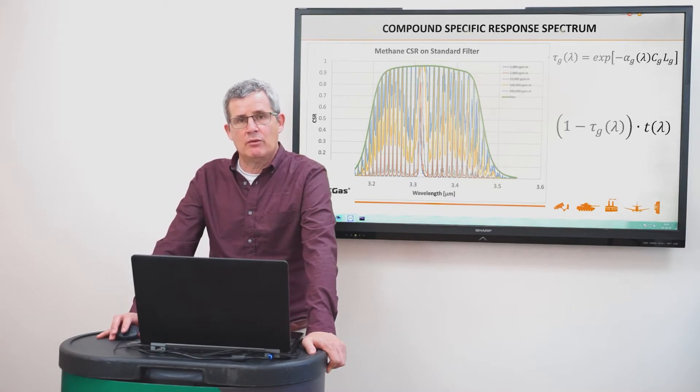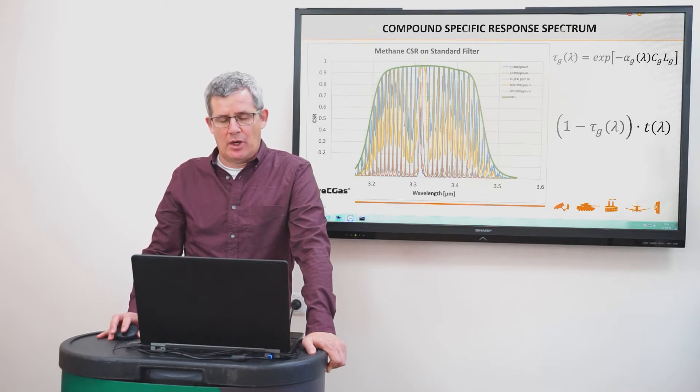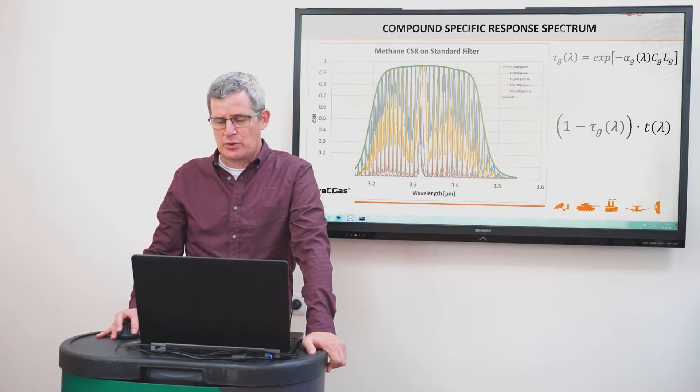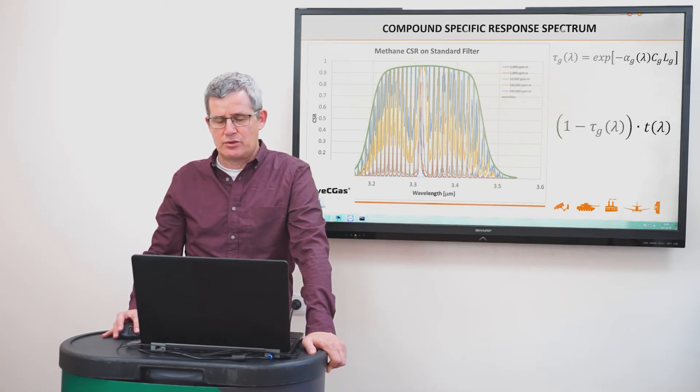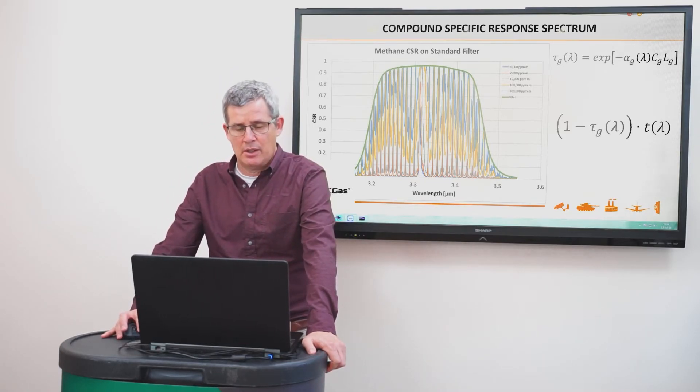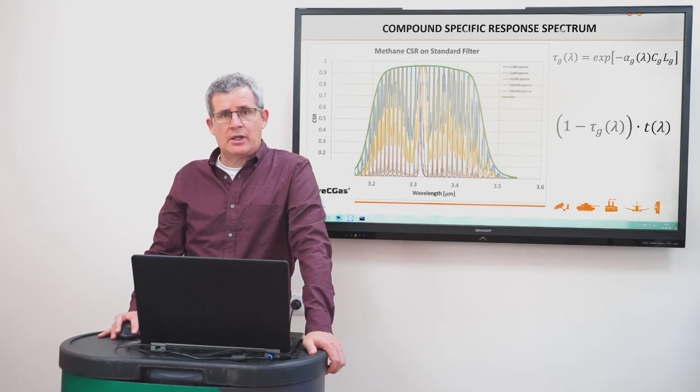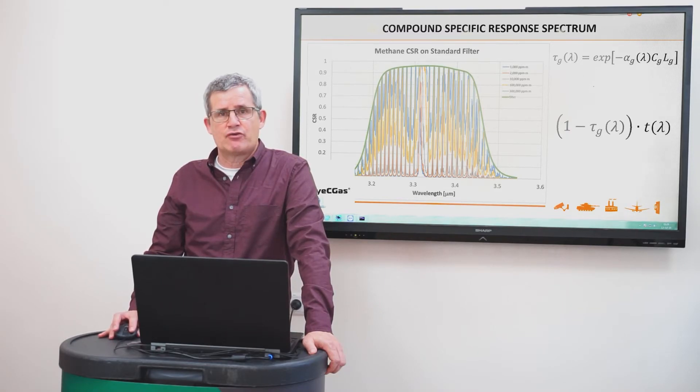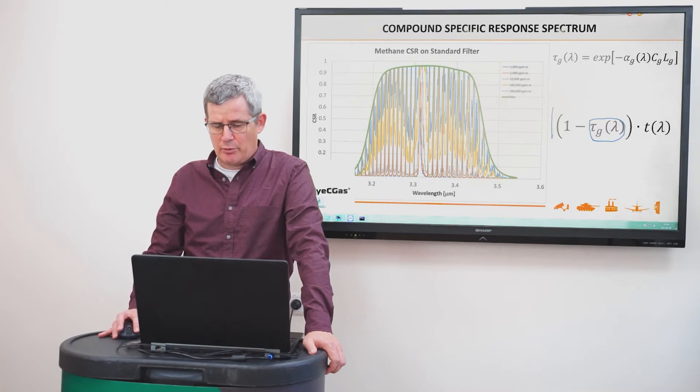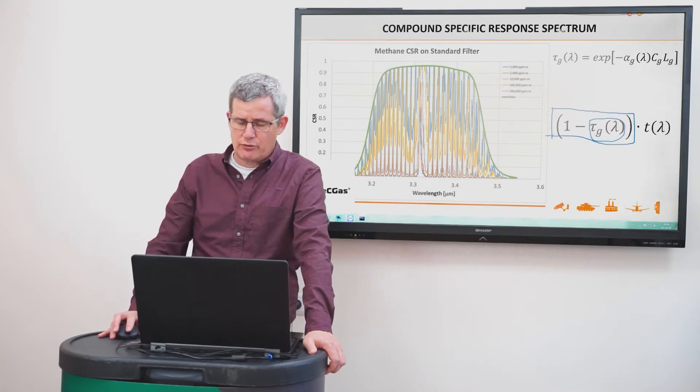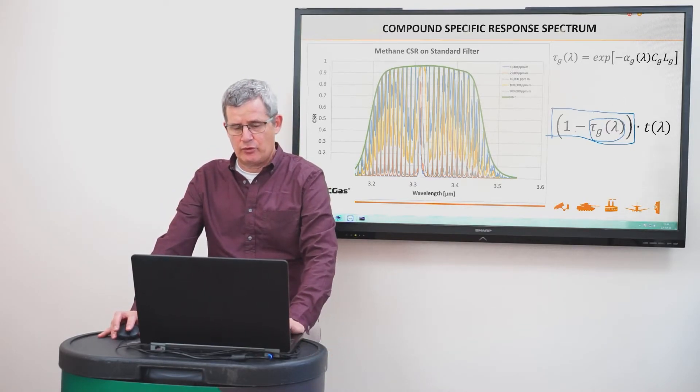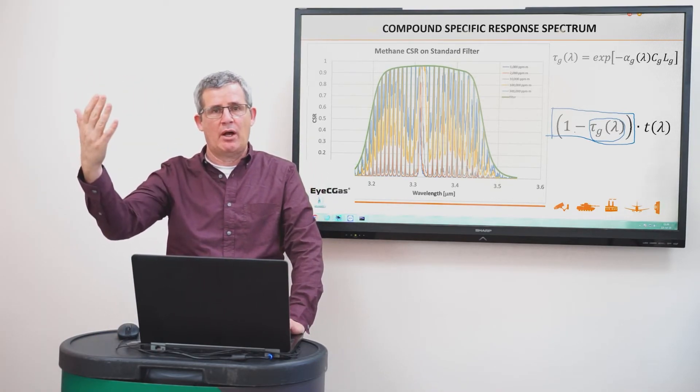So for each compound, we need to look at the spectrum of the compound specific response, which is one minus the transmission in different concentration. And here we have a plot between 1000 ppm meters to 300,000 ppm meters. And we can see as concentration going higher, it's confined by the transmission of the filter. And this compound specific spectrum can never go above one because when concentration is going very high, the transmission is going to zero. And this term of compound specific response spectrum is going to one. That means that the radiation from the background is fully blocked by the gas plume.